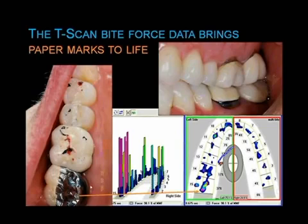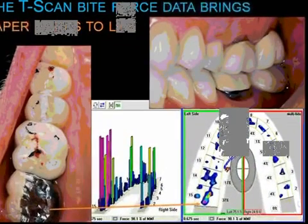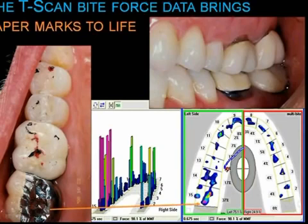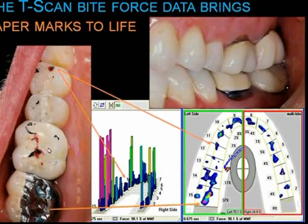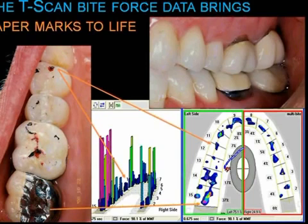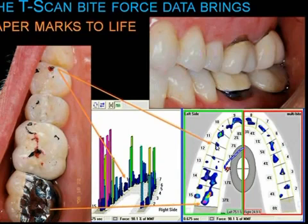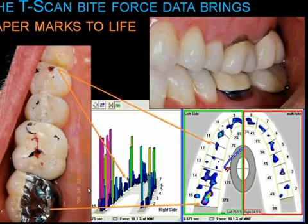Now look at the T-Scan data and the paper marks on crown number 15. There are no paper marks — there is no way for you to know from paper marks alone that 37% of the left side is on that one tooth. In fact, you might think there's no contact there at all. One tooth forward is making up 17% of the occlusion and shows a myriad of paper marks, yet this is actually a lower force contact. The mark in the middle with black and red is low force — blue — while higher force is more to the distal buccal and distal lingual. And the largest mark on the side, on tooth 12, which has a very large black-on-red mark, is actually the lowest force on that side.